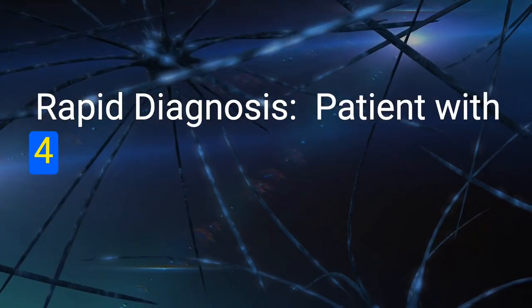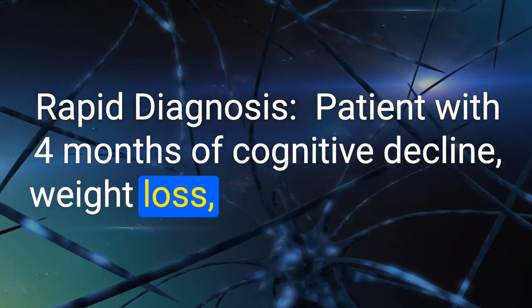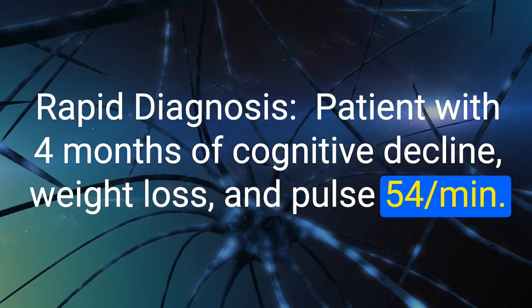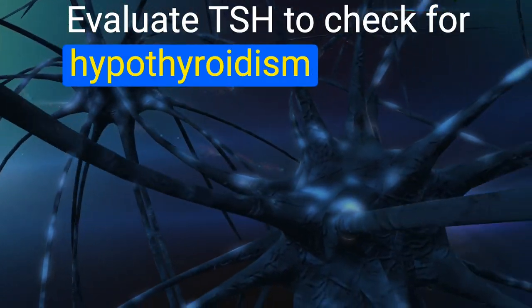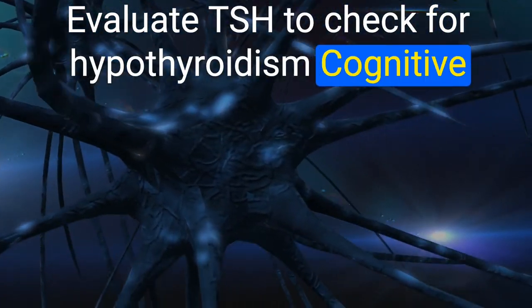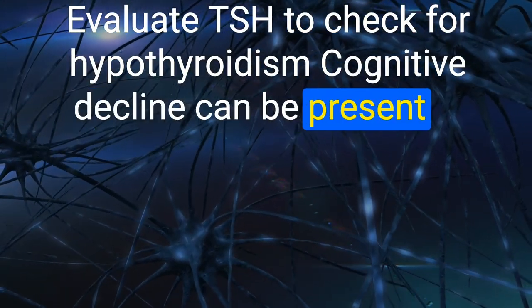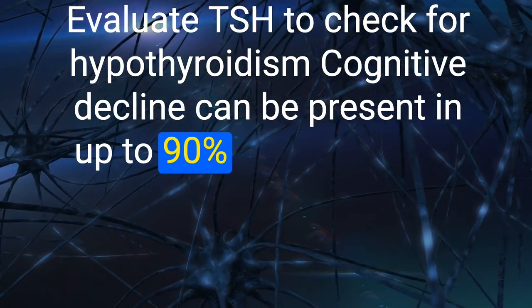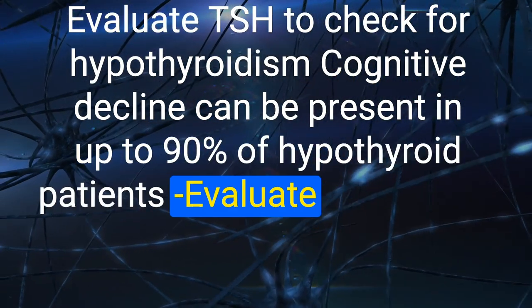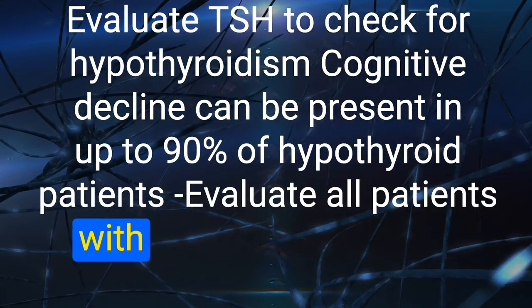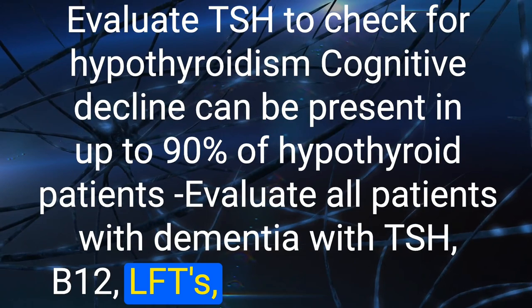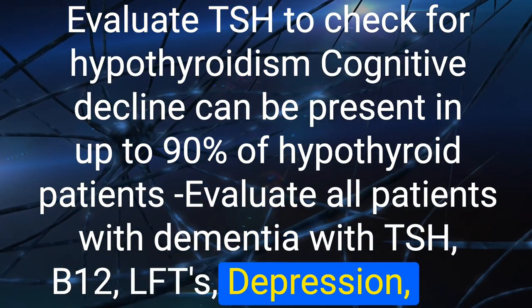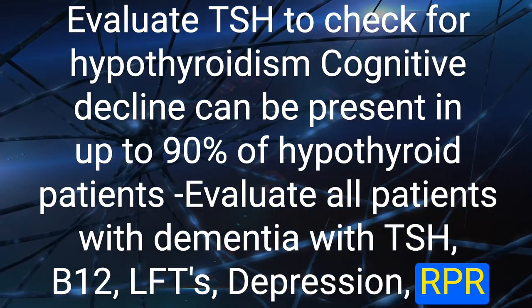Rapid diagnosis: patient with four months of cognitive decline, weight loss, and pulse of 54. Evaluate TSH to check for hypothyroidism. Cognitive decline can be present in up to 90% of hypothyroid patients. Evaluate all patients with dementia with TSH, B12, LFTs, depression screen, and RPR.